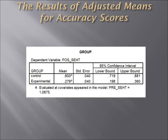The adjusted mean of the experimental group is 0.27, which is less than the adjusted mean of the control group at 0.8, which shows that the model essays have a positive effect on improving accuracy. There are significant differences between the control and experimental groups in terms of accuracy of rewriting performance.